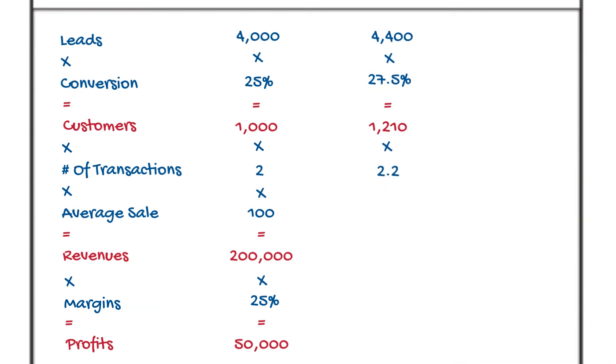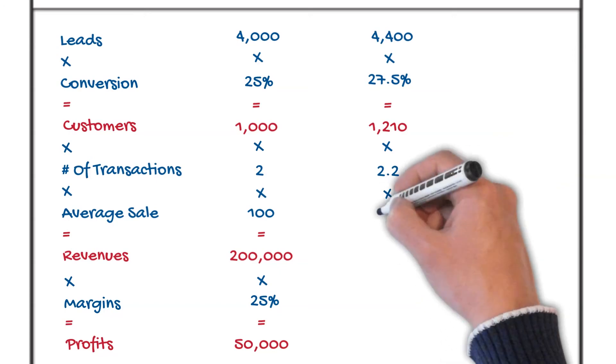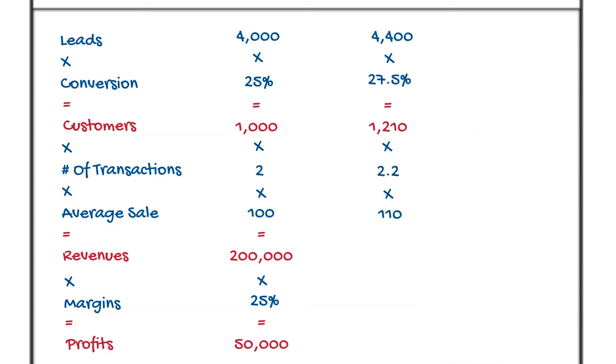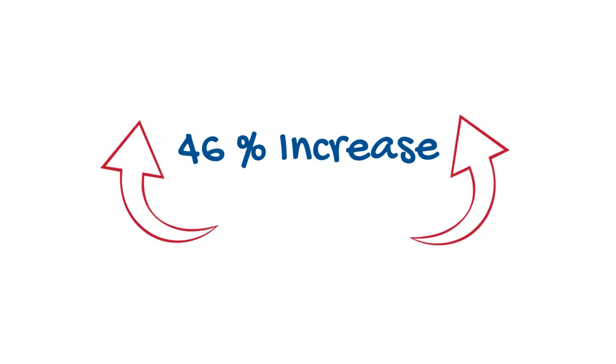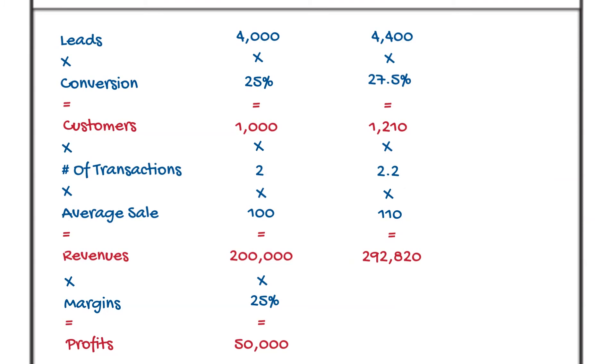Then, we go on to your average sale. Again, we're only looking for 10% improvements in these areas. So, 100 becomes 110. So, of course, we've increased revenue by 10%? No, no, no. It's a 46% increase. See that? We've got $292,820.